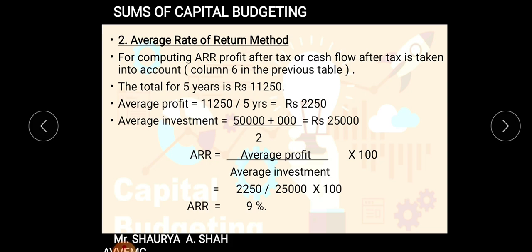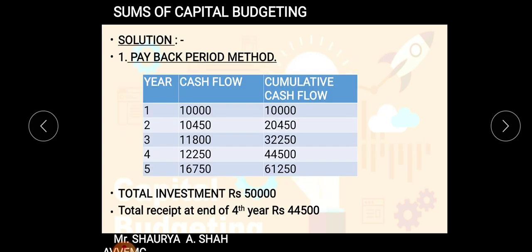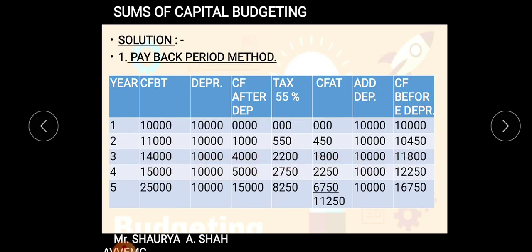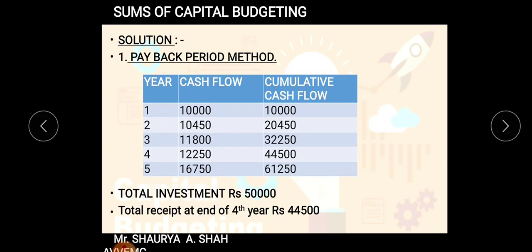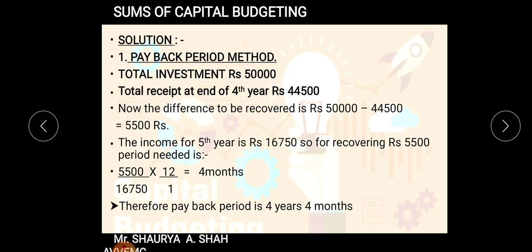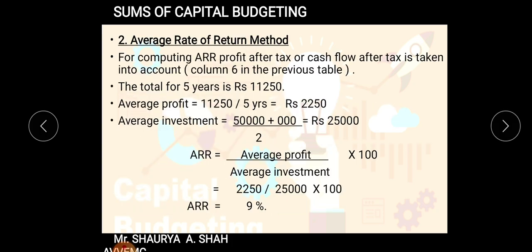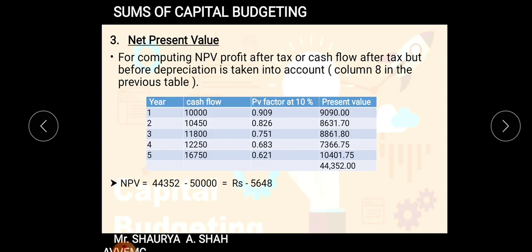The answer according to ARR is nine percent. You don't need to evaluate the results in this sum — just find the values for each method. The entire sum is based on the table, which is helpful for every other method. In the exam, hardly two or three methods are asked. Moving ahead is the Net Present Value (NPV) method.